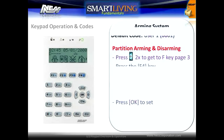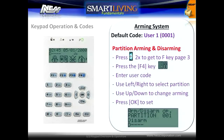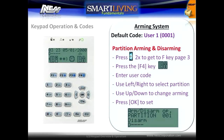To arm multiple partitions, simply press the right arrow two times to get to shortcut page 3. Press the F4 key to open up the arming menu. Enter in your user code and use the left and right keys to select the partition, and the up and down keys to change arming.